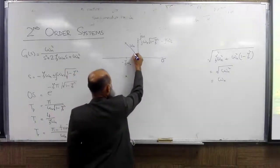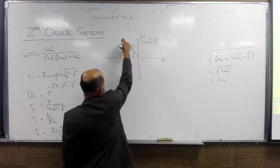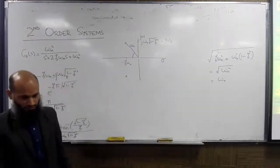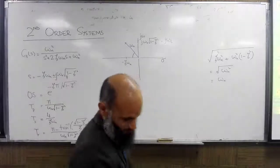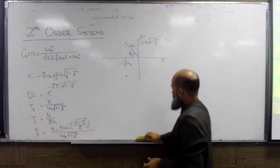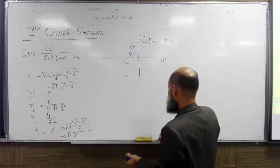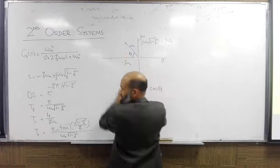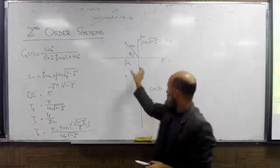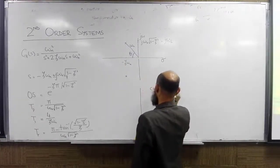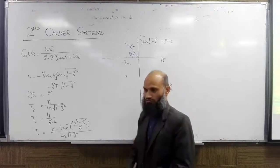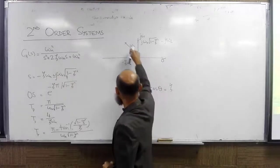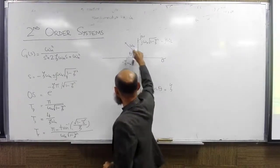The angle which this vector from the origin to the pole makes is named theta. We can see that cosine of theta is this length divided by this length — the real part divided by the vector length — so zeta is equal to cosine of theta. Cosine of the angle which this vector, from origin to the pole, makes.